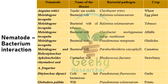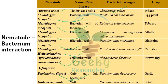Now we will see the nematode-bacteria interaction. Anguina tritici, the ear-cockle nematode, is associated with bacteria Clavibacter tritici in wheat. Meloidogyne incognita is associated with bacterial wilt of eggplant caused by Ralstonia solanacearum, bacterial wilt of tobacco, bacterial wilt of alfalfa, and bacterial scab of gladiolus. Helicotylenchus is associated with bacterial wilt of carnation. Ditylenchus dipsaci is associated with bacteriosis of garlic. Globodera pallida is associated with wilt of potato — with the association of these nematodes, bacterial infection severity goes up.